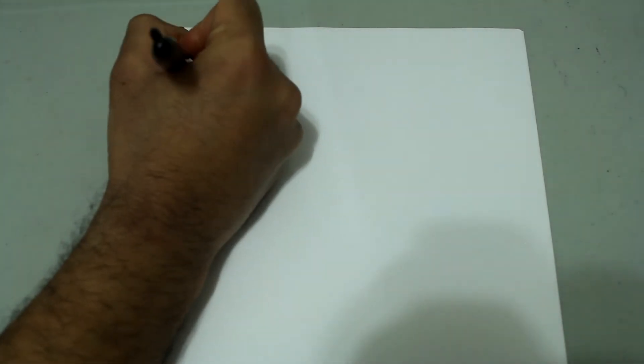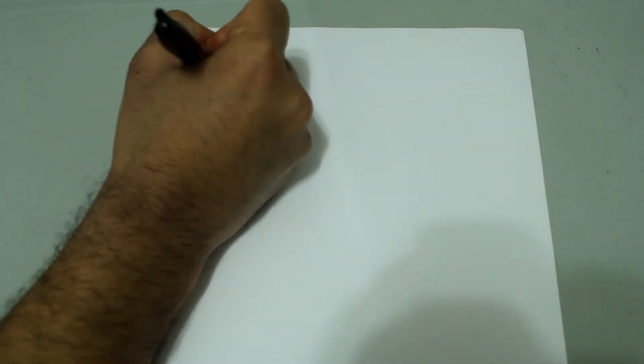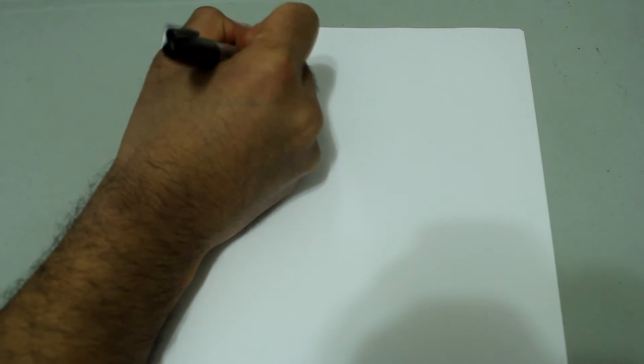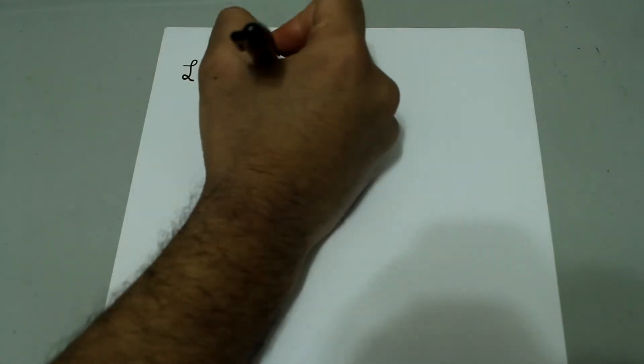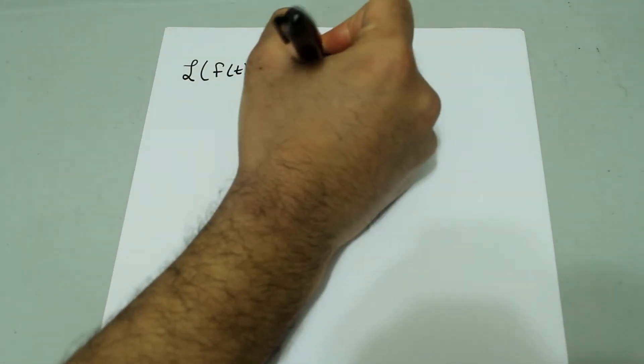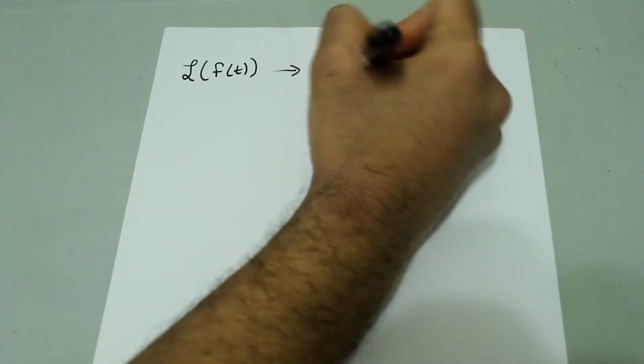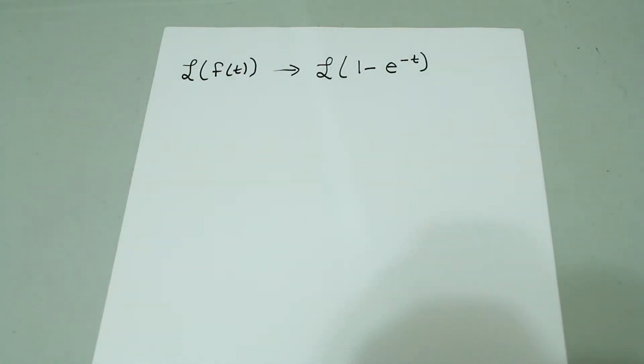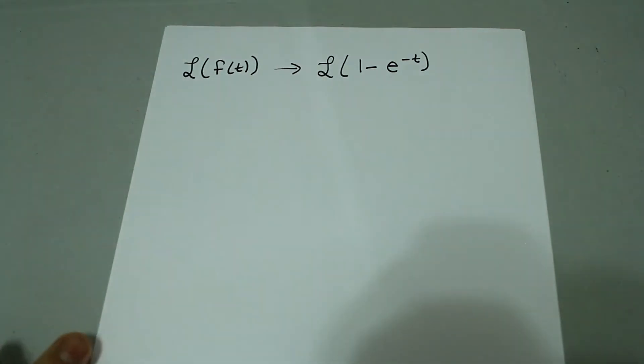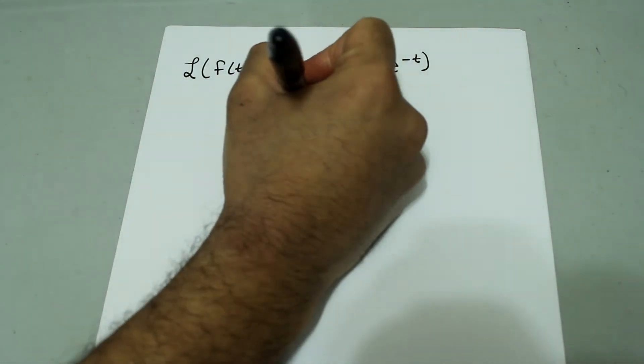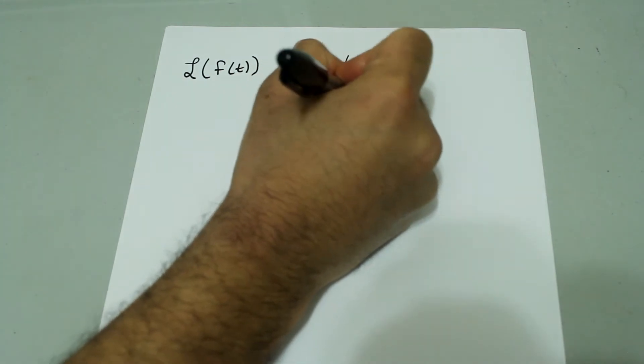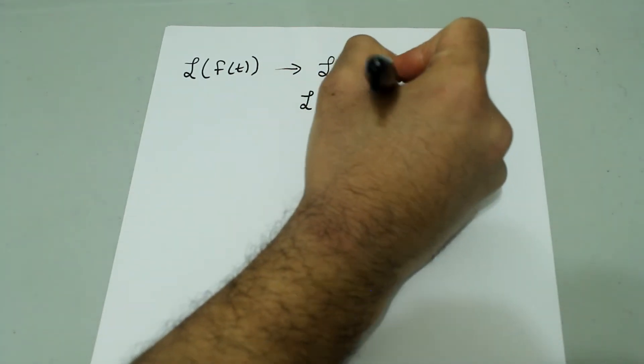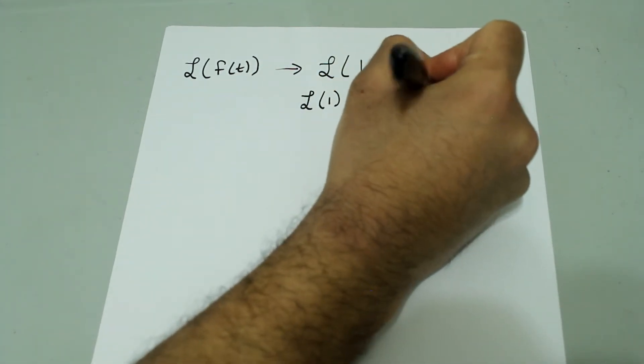So, let's go ahead and find the Laplace transform of f of t. We're going to try and find the Laplace of f of t, which is the Laplace of 1 minus e to the negative t. And since Laplace is a linear operator, we can split this up as Laplace of 1 minus Laplace of e to the negative t.